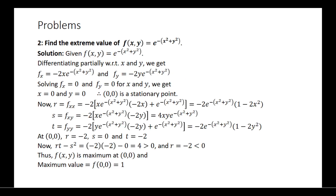Find the extreme value of the function f(x, y) equal to e to the power of minus of x squared plus y squared. Consider the given function and differentiate this partially with respect to x and y, and we will find out the stationary point.